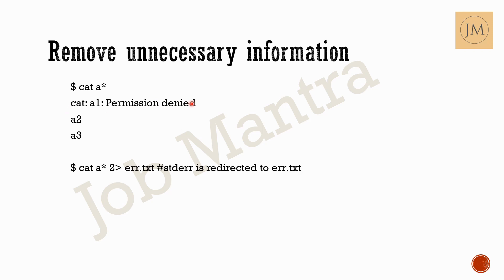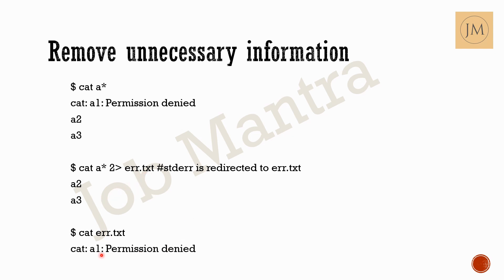To remove the standard error from the terminal output, we can use 'cat a* 2> error.txt'. This redirects the standard error to error.txt, so only a2 and a3 content is printed to the terminal. The error message for a1 (permission denied) is stored in error.txt, which we can view by running 'cat error.txt'.